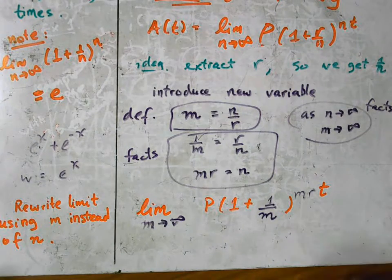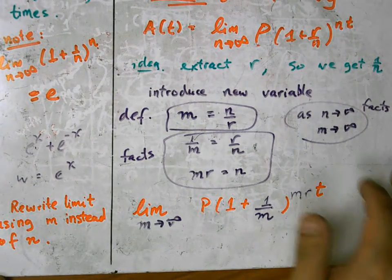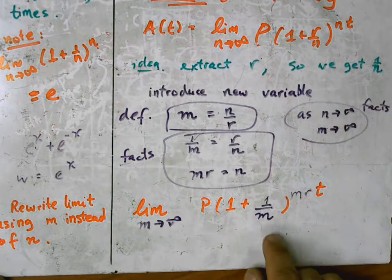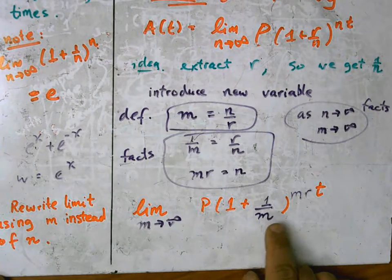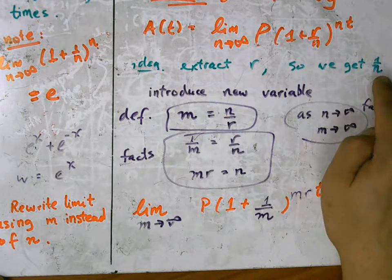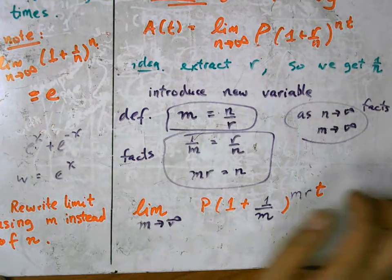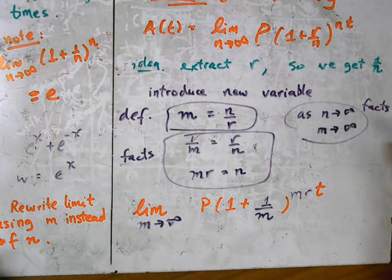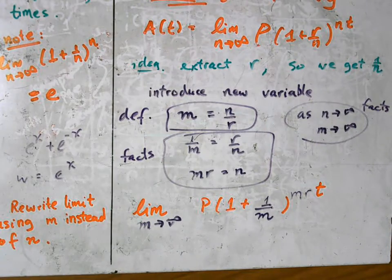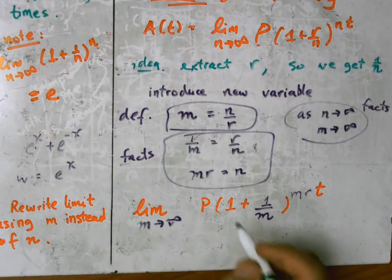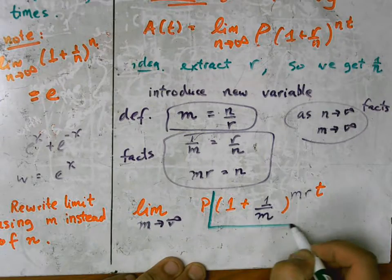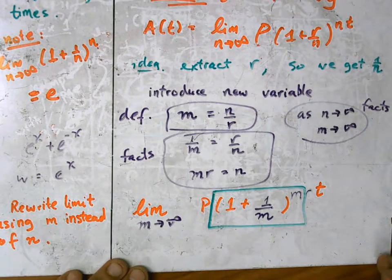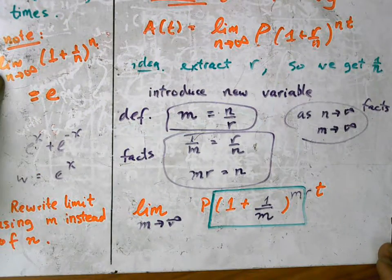And notice here that we've accomplished what we set out to do. We extracted r and we get 1 over a variable in here. The variable isn't the same one as this, but it behaves just like it. m behaves just like n because as one of them gets big, the other also gets big. So now if we look at this part, that is in fact equal to e.